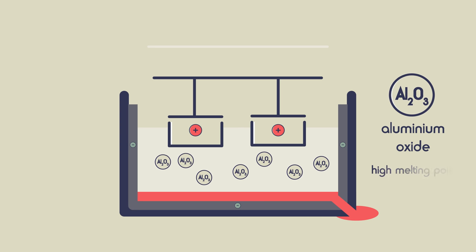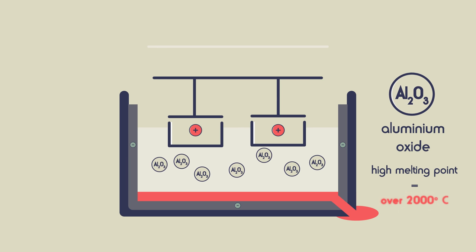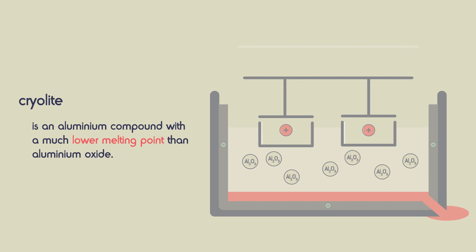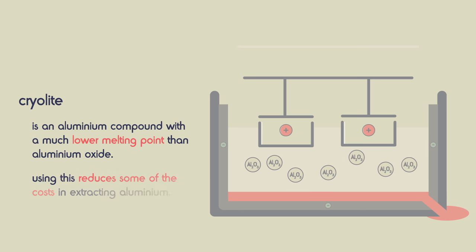Aluminium oxide has a very high melting point, over 2000 degrees Celsius. So instead of trying to melt it, the aluminium oxide is dissolved in molten cryolite. Cryolite is an aluminium compound with a much lower melting point than aluminium oxide. So using this reduces some of the costs in extracting aluminium.